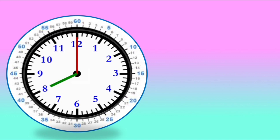We have a clock on our screen. The red hand which is long is called the minute hand. The green hand which is short is called the hour hand.